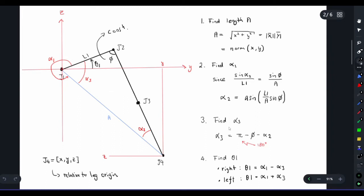Once we find alpha 2 we can find alpha 3 here. By looking at the triangle we can see that alpha 3 is pi minus phi minus alpha 2, and in this case pi is 180 degrees but in radians. Once we find alpha 1, alpha 2, and alpha 3 we can find theta 1. Depending on which side of the robot, we might need to either subtract or add alpha 3 to alpha 1. If the leg is on the right side of the robot then we subtract alpha 3 from alpha 1, and if it's on the left side we add alpha 3 to alpha 1.